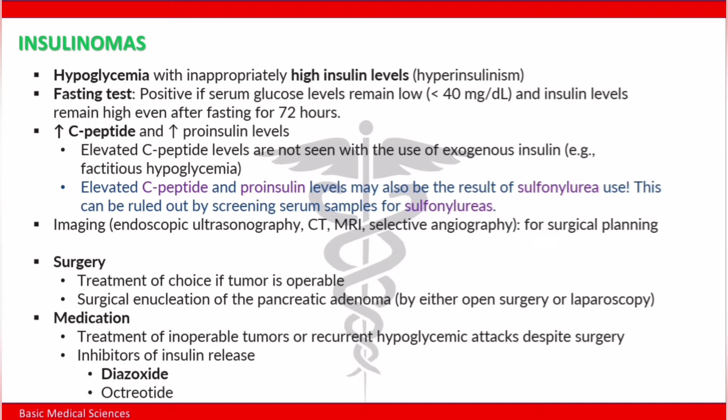For diagnosis of insulinomas, if we check plasma glucose we will see that the patient is hypoglycemic with an inappropriately high insulin level — hyperinsulinism. The fasting test will be positive if serum glucose remains low, less than 40 milligrams per deciliter, and insulin levels remain high even after fasting for 72 hours.